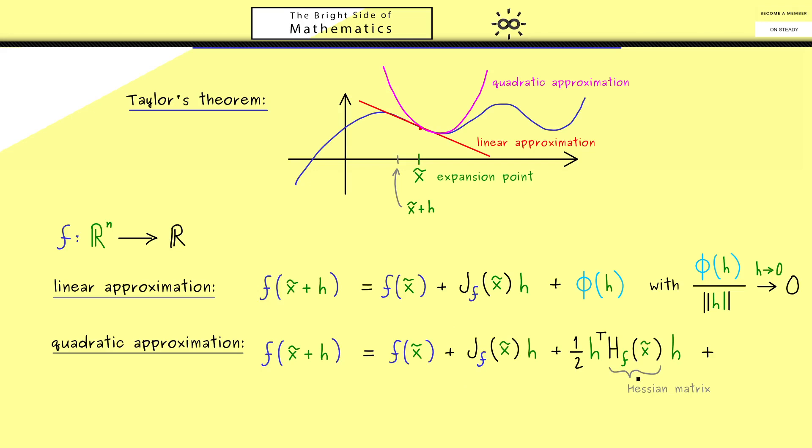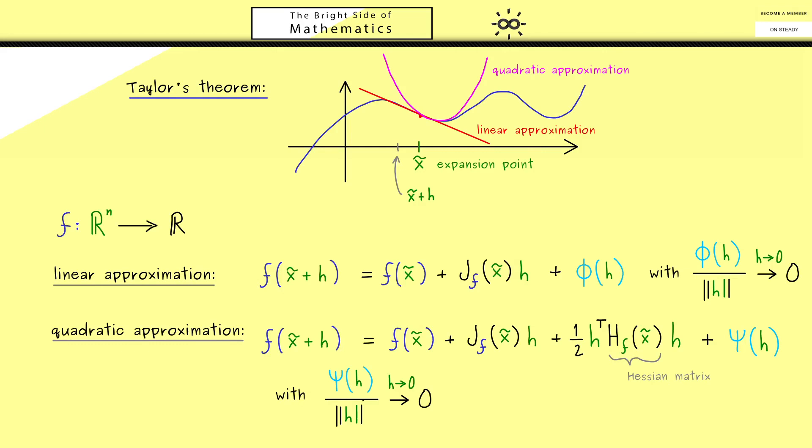And then of course we also need an error term and maybe we call it psi now. And as before, this should go fast enough to zero when h tends to zero. And in order to have a good quadratic approximation, it should go faster to zero than h squared. Therefore, we have to divide this term here by the norm of h squared. Ok, with this I would say, now we have the whole idea how we can generalize Taylor's theorem in multivariable calculus, such that we now can write down the theorem.